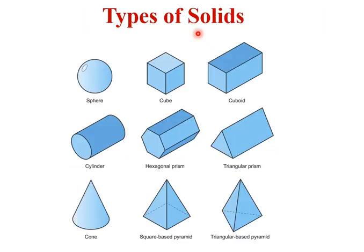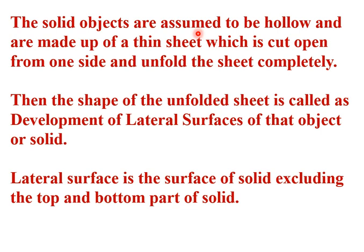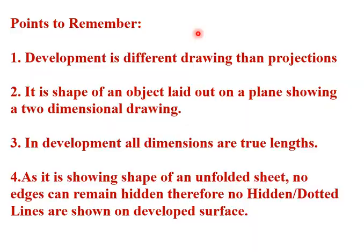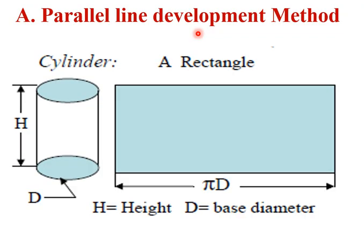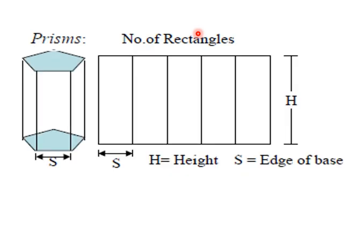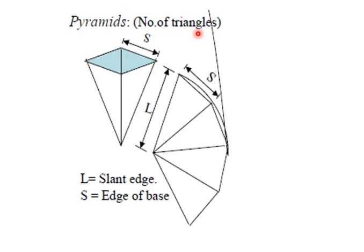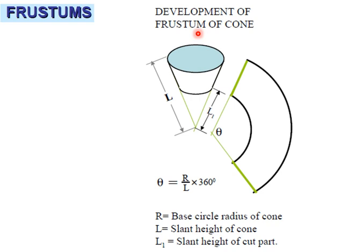This is a short explanation of what is meant by these various types of solids, what is meant by development of lateral surfaces, its applications, important points, and how the parallel line development method is useful for drawing the development of lateral surfaces of cylinders and prisms, and how the radial line development method is useful for cones and pyramids. For this lecture covering the basics of development of lateral surfaces, we will meet again in the next lecture with more clarifications and details.